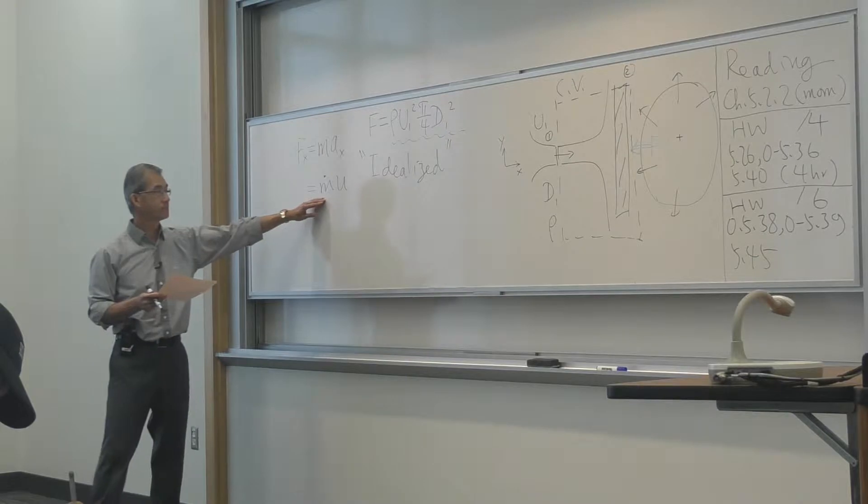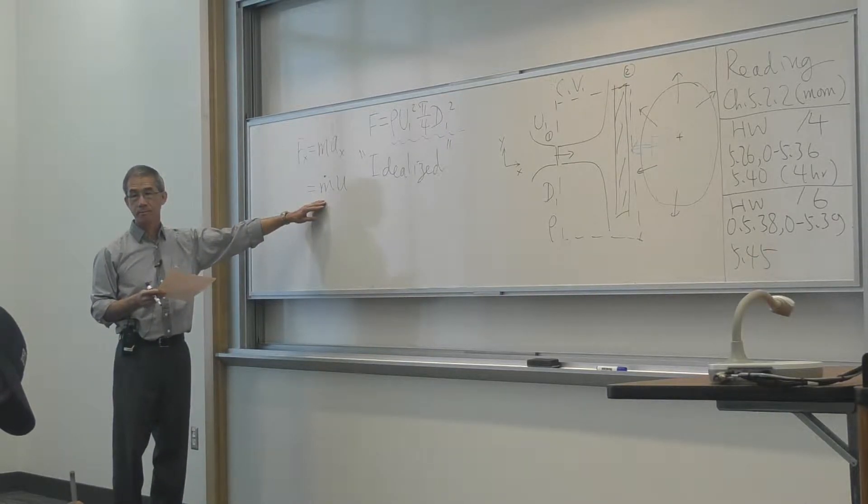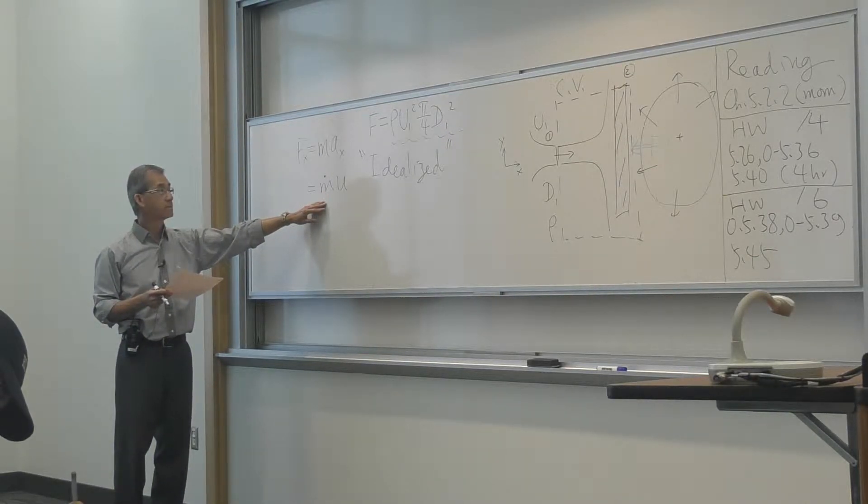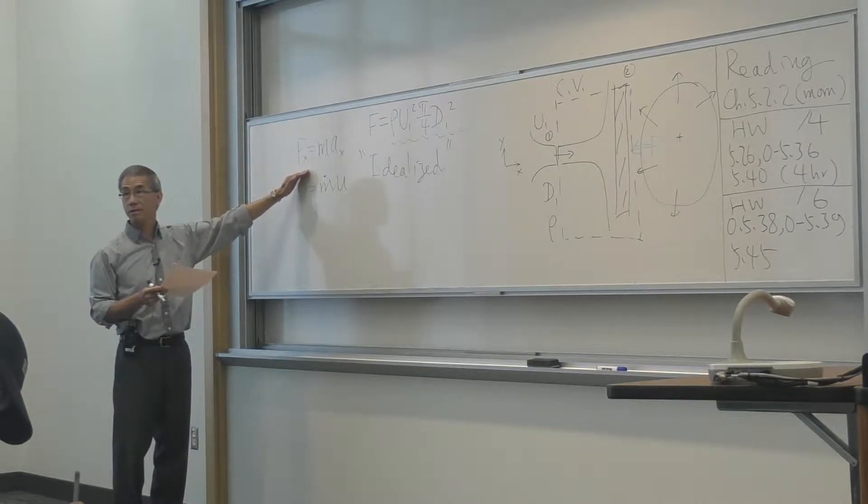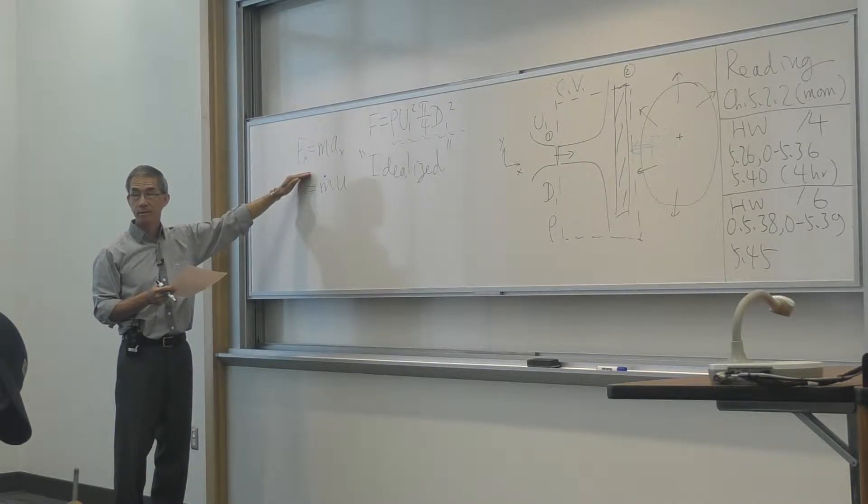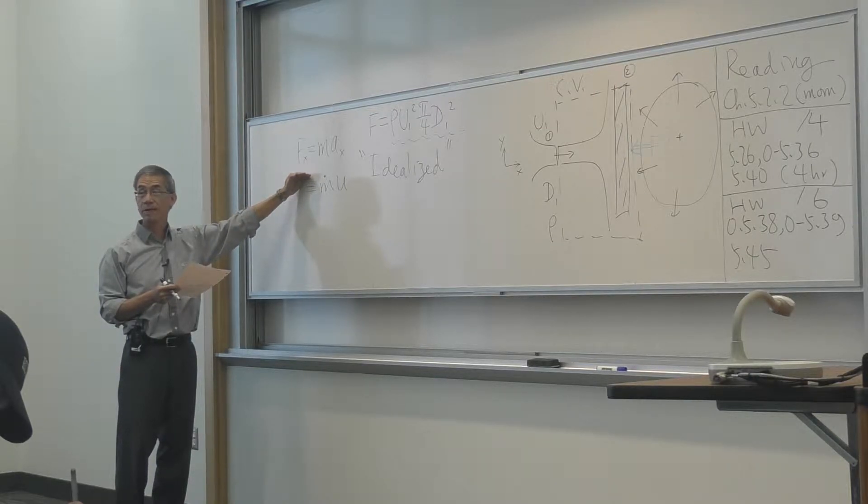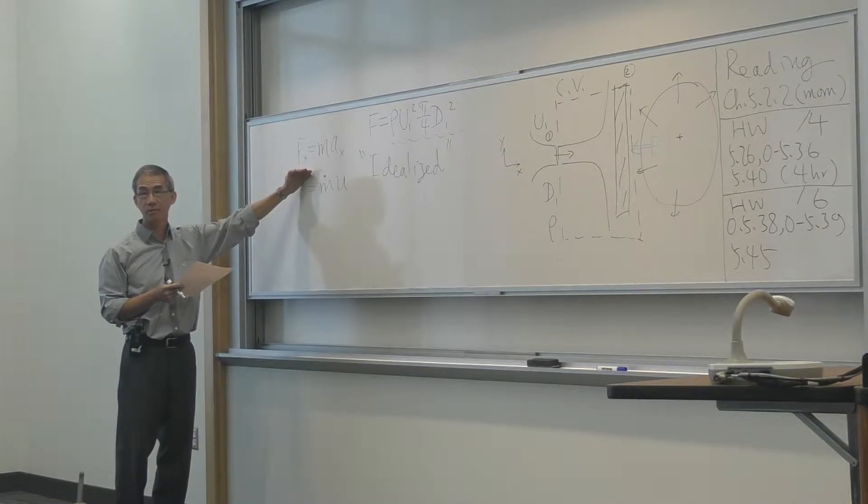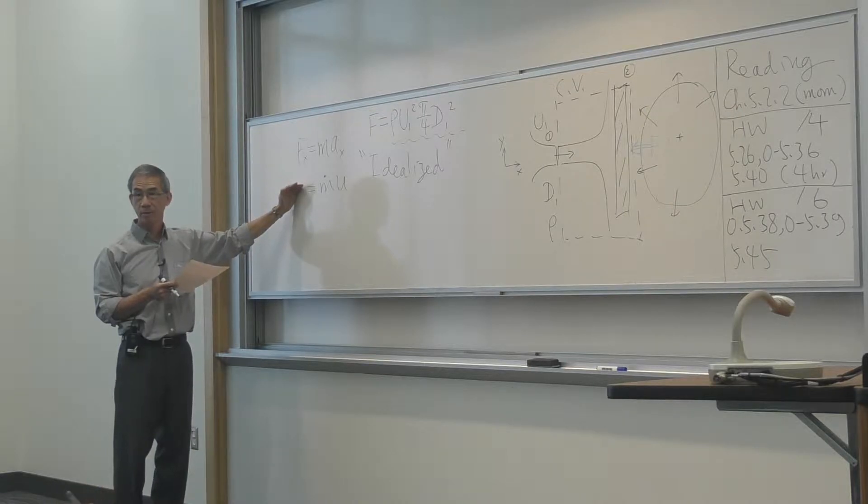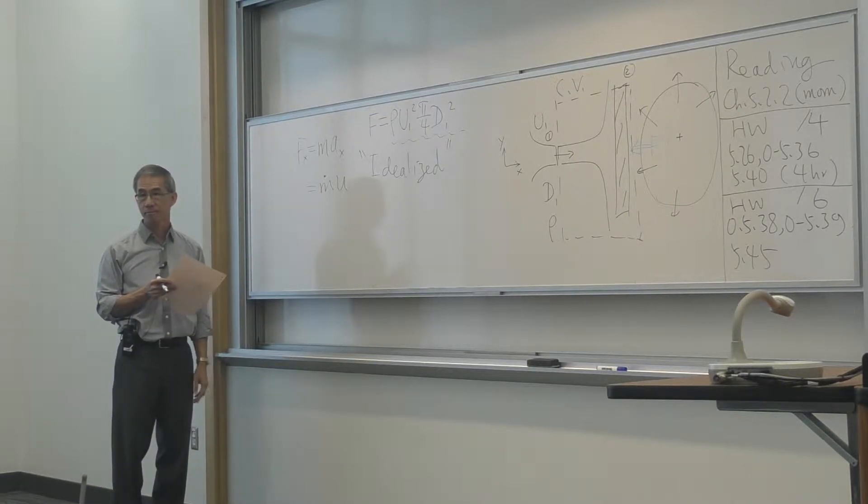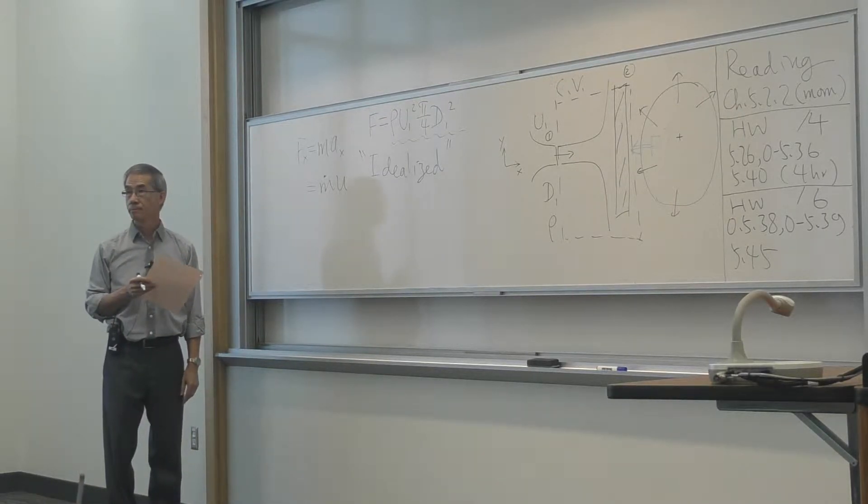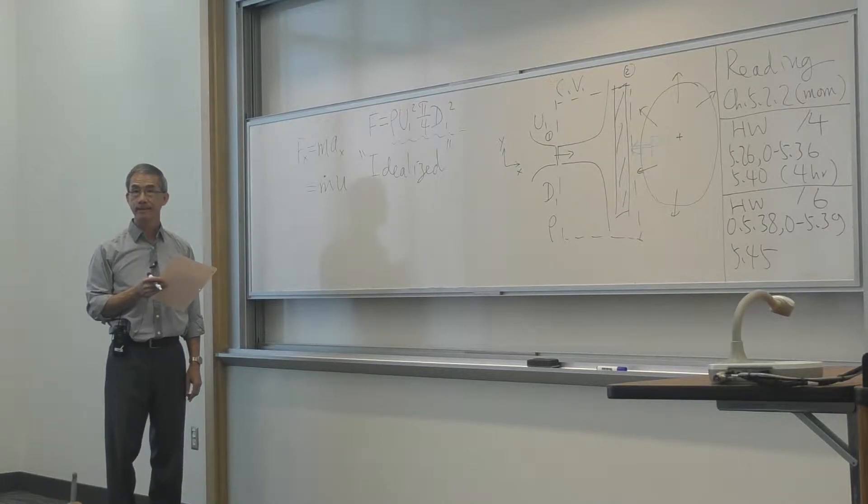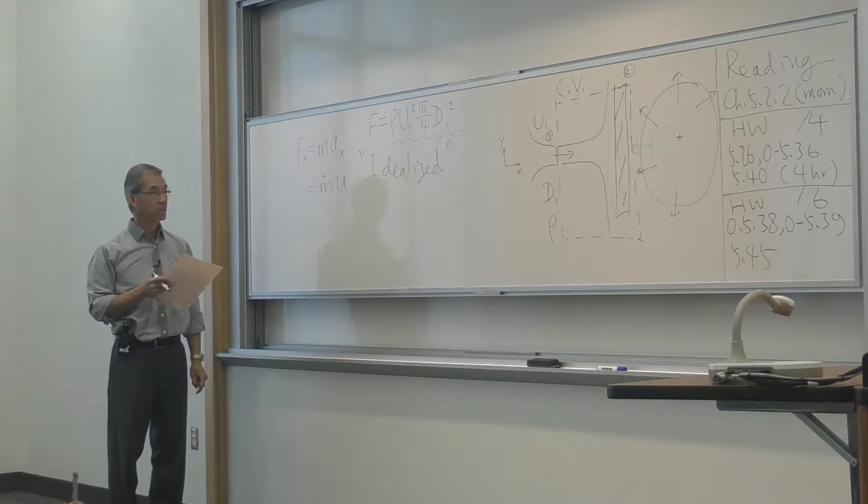Does that equation assume velocity remains constant or does mass flow rate account for that? First of all, this is all steady equations. Everything we talk about is steady. If it's unsteady, meaning the velocity or the mass flow rate is changing, I have to have a different equation, which would be the next lecture. Same with continuity. Very important concept to remember.